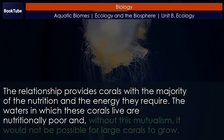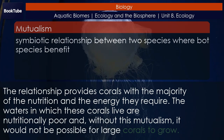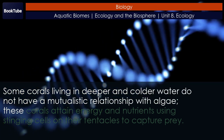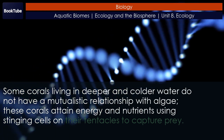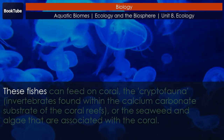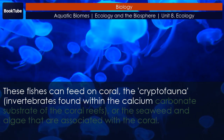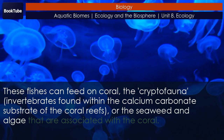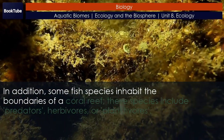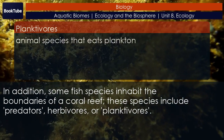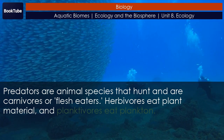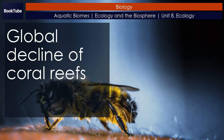The mutualistic relationship provides corals with the majority of the nutrition and energy they require. The waters in which these corals live are nutritionally poor, and without this mutualism it would not be possible for large corals to grow. Some corals living in deeper and colder water do not have a mutualistic relationship with algae; these corals attain energy and nutrients using stinging cells on their tentacles to capture prey. It is estimated that more than 4,000 fish species inhabit coral reefs, feeding on coral, cryptofauna invertebrates found within the calcium carbonate substrate, or the seaweed and algae associated with the coral. Some fish species inhabit the boundaries of a coral reef, including predators, herbivores, and planktivores.